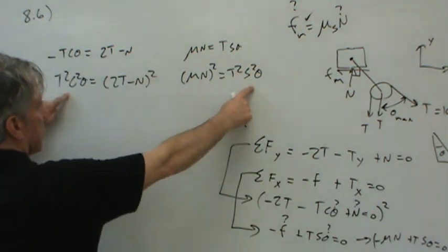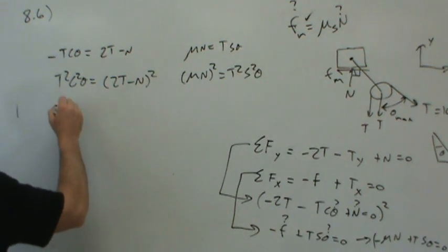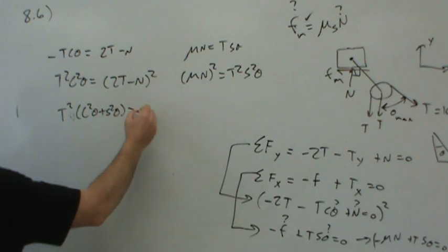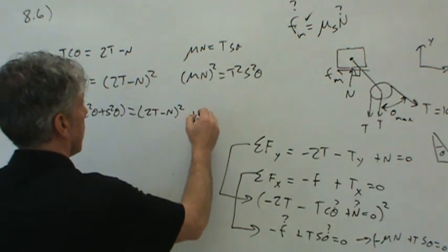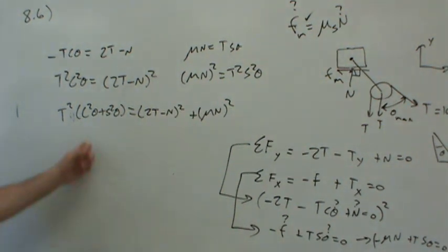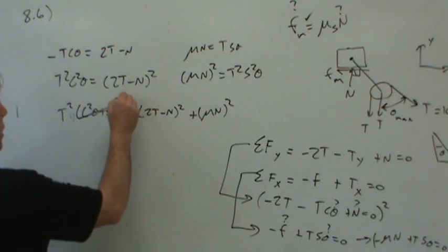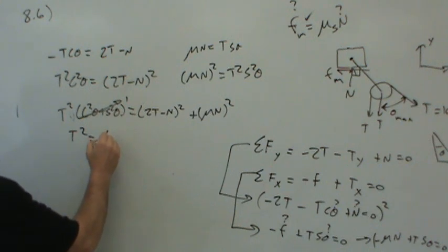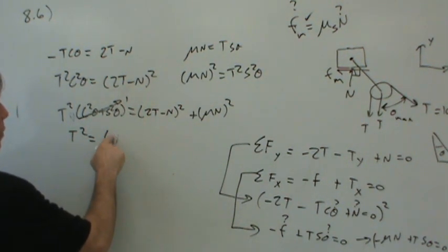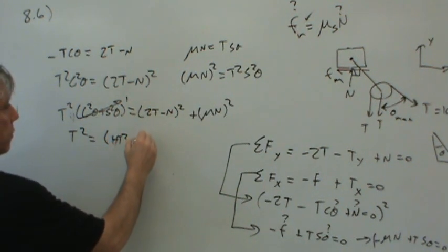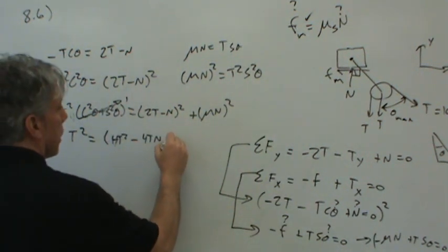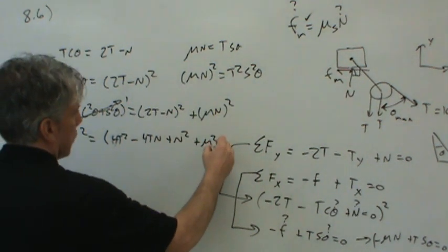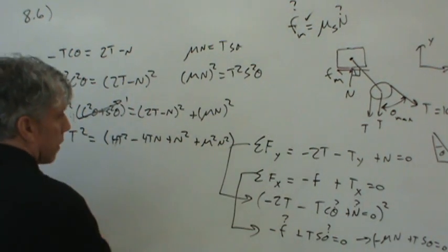Then when I add, I'll have to move around. But when I add this side to this side, I'll get T squared cosine squared theta plus sine squared theta. On the right-hand side, I'll get 2T minus N squared and then plus mu N squared. Why would I do all of that? Because what's sine squared plus cosine squared? That's just 1. So T squared equals, and let's start expanding these out. That would be 4T squared minus 4TN, because I'd have 2T times N twice, plus N squared plus mu squared N squared.